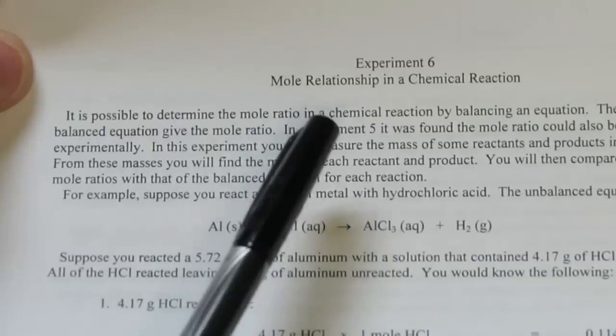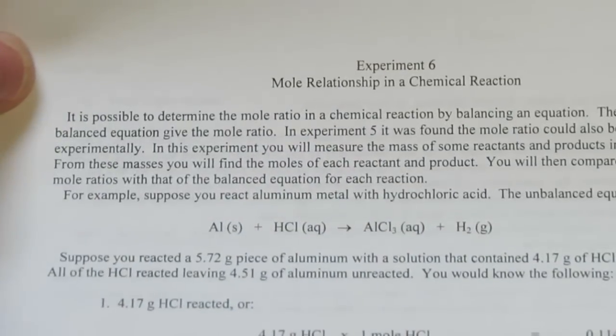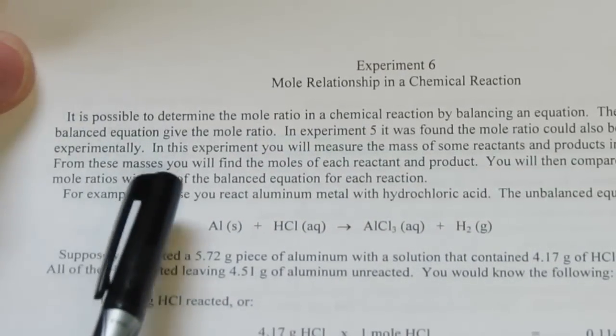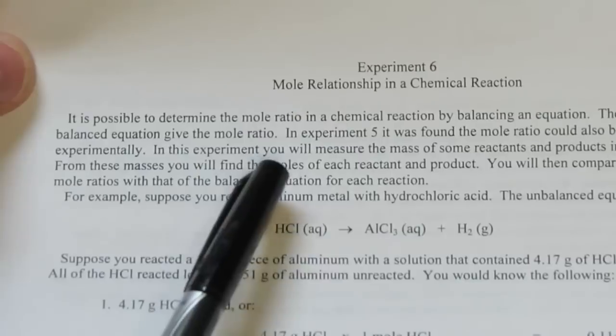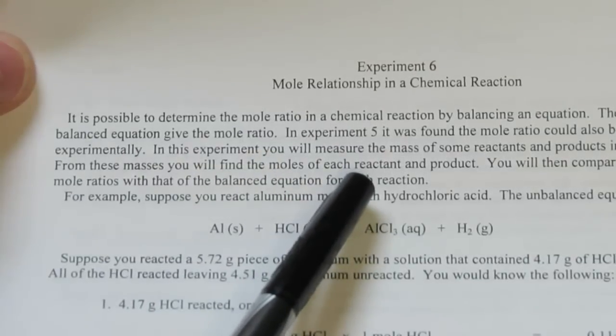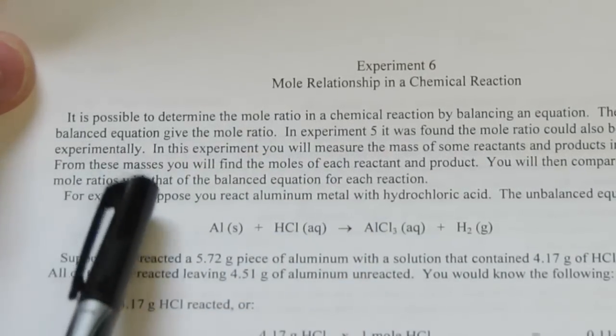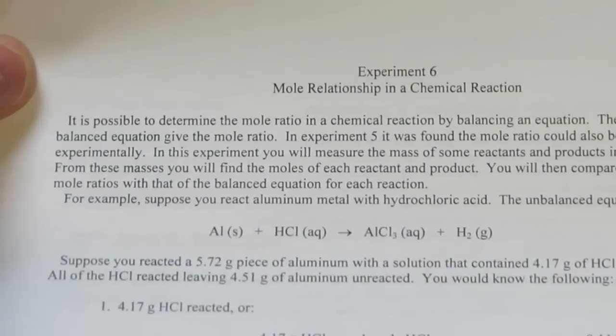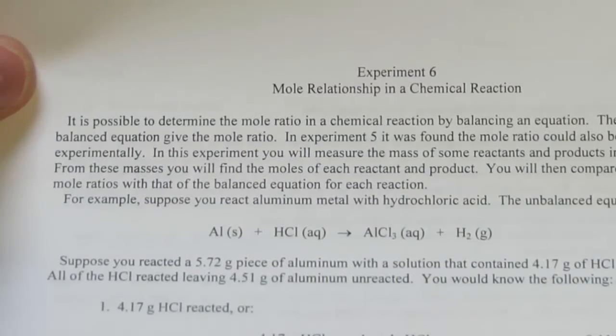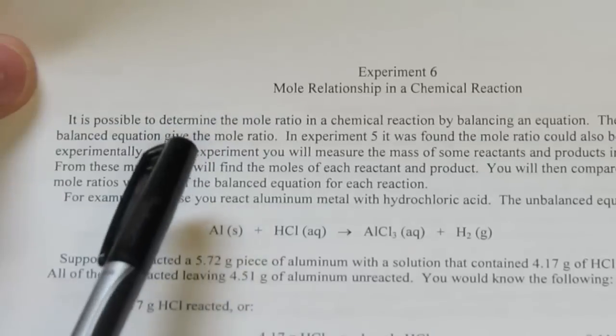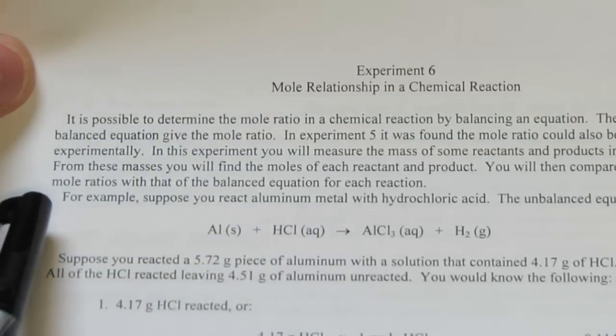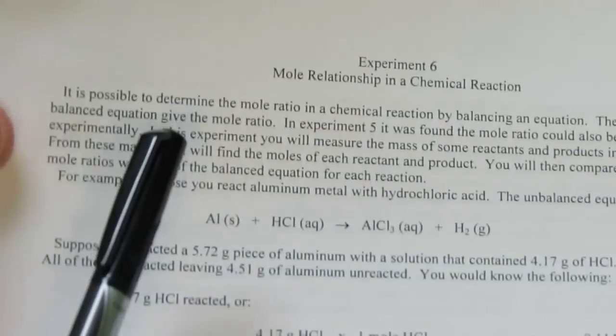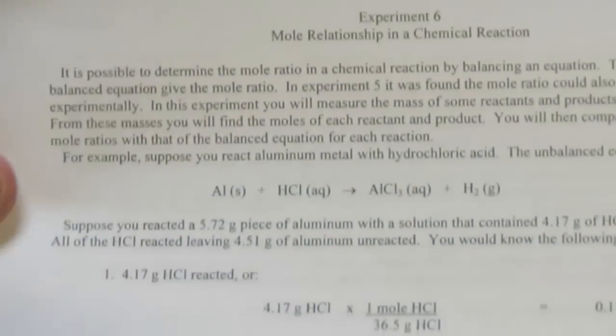In an earlier experiment, we found that that mole ratio could also be determined by doing a laboratory experiment. In this experiment, we will measure the mass of some reactants and products in several reactions. From these masses, we will find the moles of each reactant and product. So we're going to be converting from grams to moles. You will then compare the experimental mole ratios with that of the actual balanced equation.